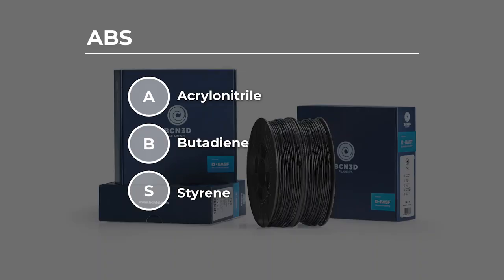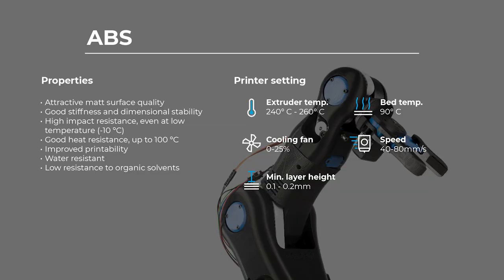ABS stands for Acrylonitrile Butadiene Styrene. It's a thermoplastic polymer renowned for its versatility, strength and impact resistance. Composed of Acrylonitrile, Butadiene and Styrene monomers, ABS offers a unique balance of properties. It combines the toughness of polybutadiene rubber, the rigidity of styrene and the chemical resistance of Acrylonitrile. These attributes make ABS an ideal choice for various applications across many industries.